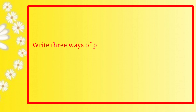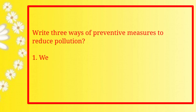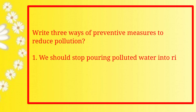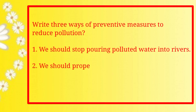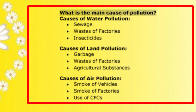Next question: Write three preventive measures to reduce pollution. Answer: Number 1 — Polluted water should not be poured into rivers and canals. Number 2 — Garbage and solid waste from houses should be disposed of in a proper way. Number 3 — The number of vehicles needs to be reduced, and smoke-emitting vehicles should be banned.